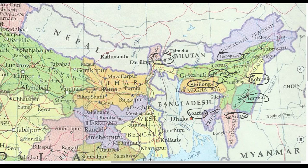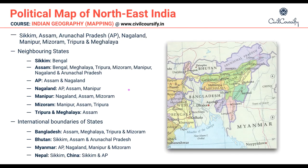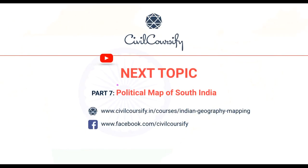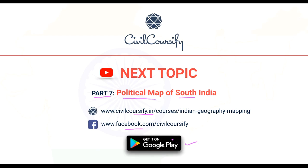Arranged from west to east: Gangtok, Agartala, Shillong, Dispur, Aizawl, Itanagar, Imphal, and Kohima. These are the northeastern states of India. In the next video we'll cover part 7, the political map of South India. Follow us on Facebook, download the CivilCoursify Android app from the Google Play Store. Thank you and have a nice day.